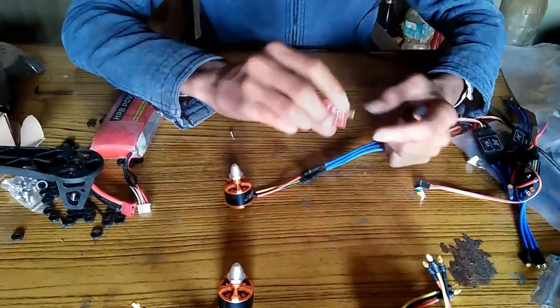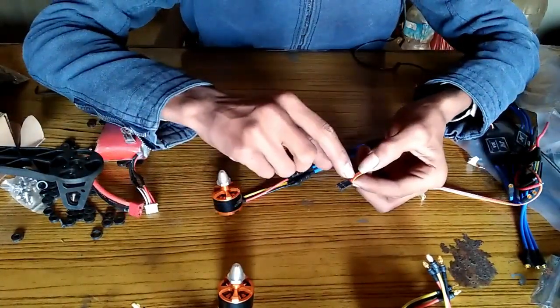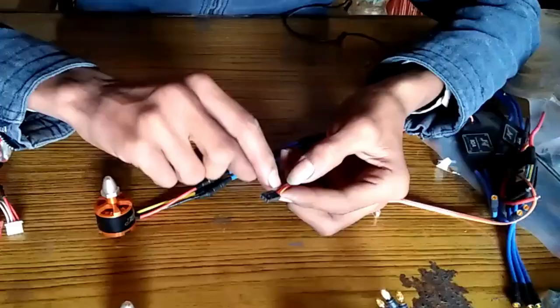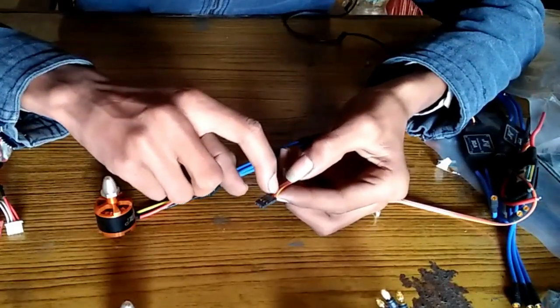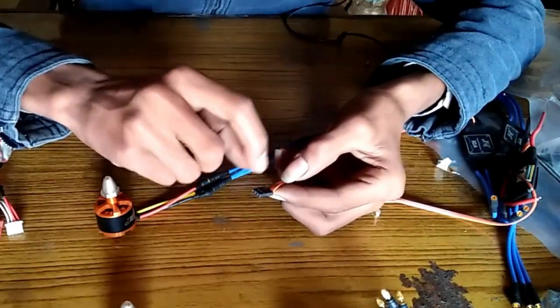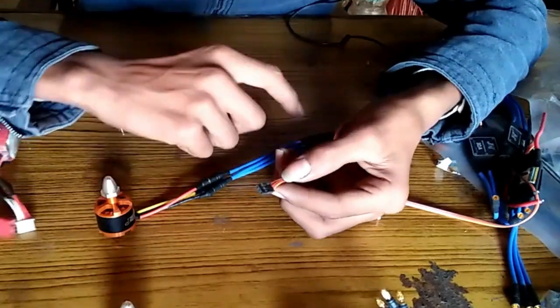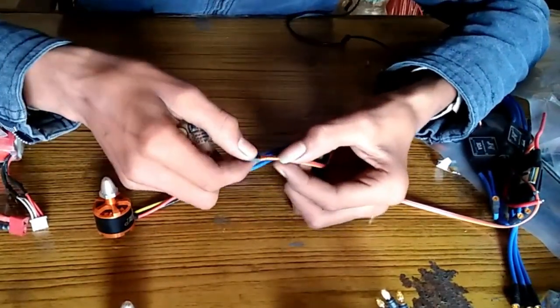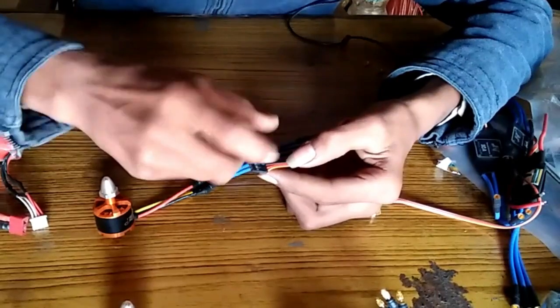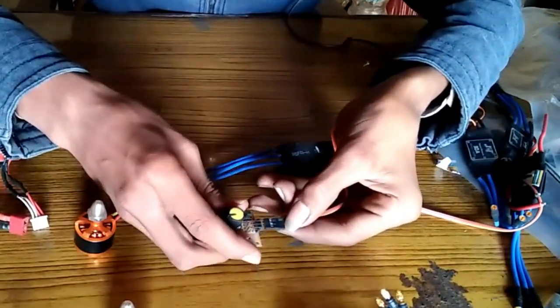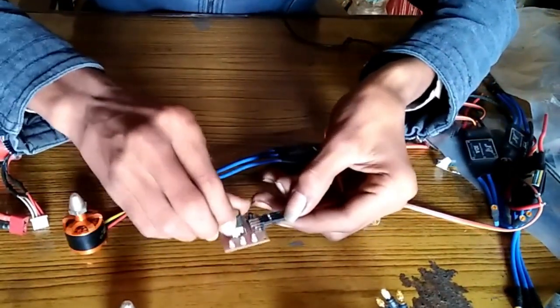We need to use a servo tester. This is a servo tester. You can see in the ESC wire one is black, this is the ground, and the middle one is the red wire which carries five volt from the BEC of the ESC, and this orange color wire is the signal wire. Just plug this in the servo tester.